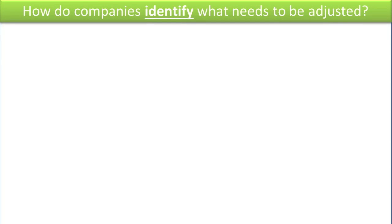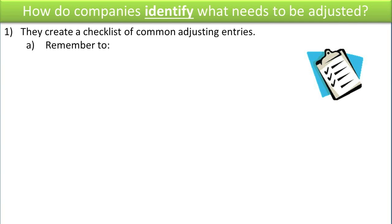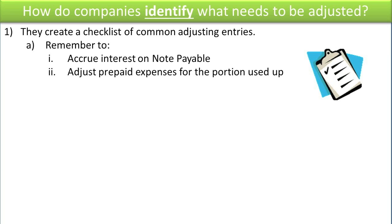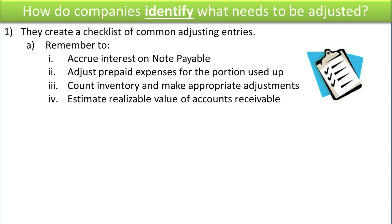How do companies identify what needs to be adjusted? Companies have their own various systems, but in general you'll see the following approaches. One: they create a checklist of common adjusting entries, which enables them to remember to accrue interest on notes payable, adjust prepaid expenses for the portion used up, count inventory and make appropriate adjustments, estimate the realizable value of their accounts receivable, etc. There's a big long checklist, and they work through that list to make sure they don't forget to adjust any account.